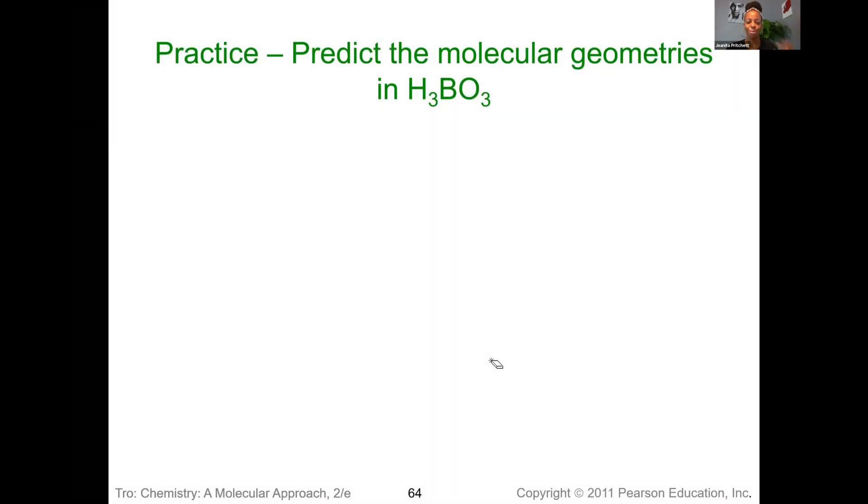All right, so let's put this all to test. We have H3BO3. And so, again, go through that progression to be able to predict the molecular geometry. Well, the first thing we need is we need the Lewis structure, right?